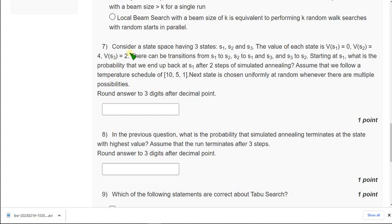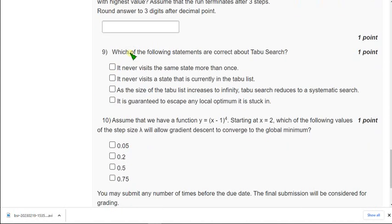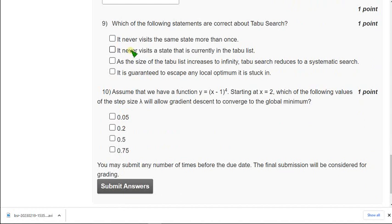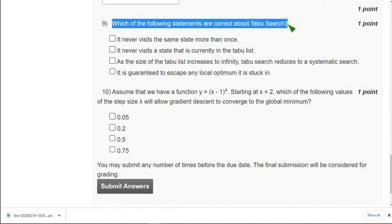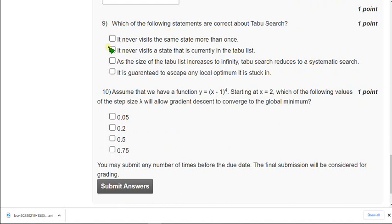I am directly moving on to the ninth question. Which of the following statements are correct about tabu search? Here also I can be able to give you only one option, that is also probable solution. I don't want to attempt unknown options because even including a single incorrect statement will not give you the mark. So I am sticking with only one option here. That is first option: it never visits the same state more than once.